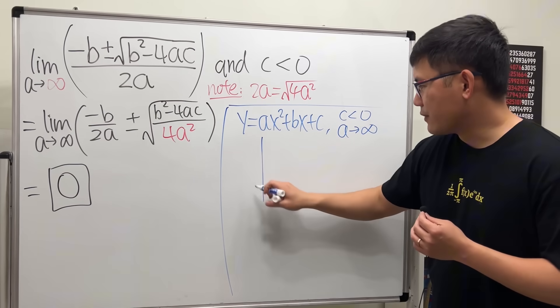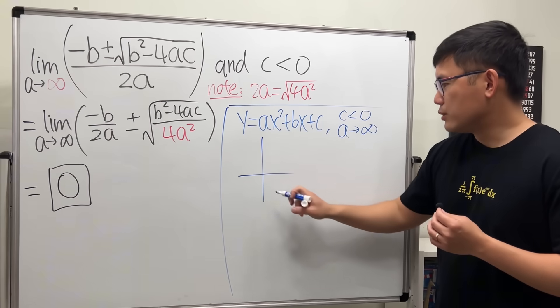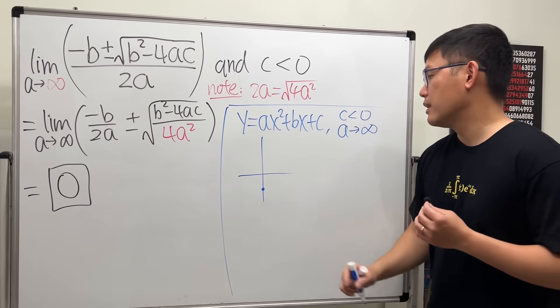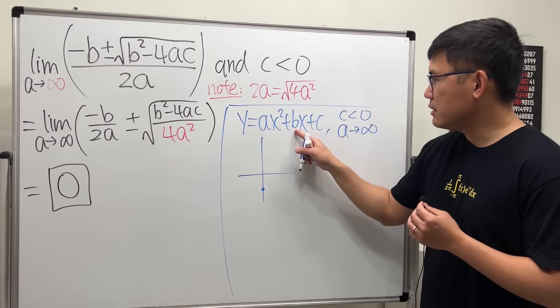For the first graph, I'm just going to give you a first graph. c is less than zero, so the y-intercept is somewhere here. I'm not talking about the vertex, just the y-intercept.